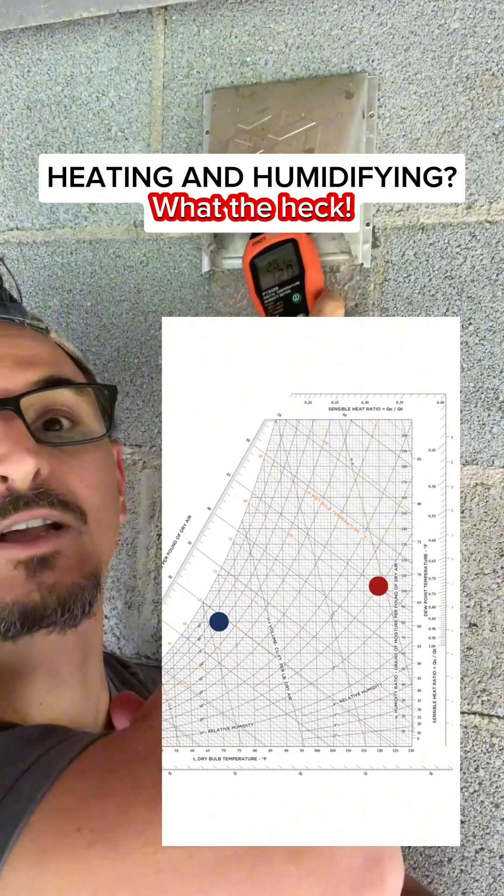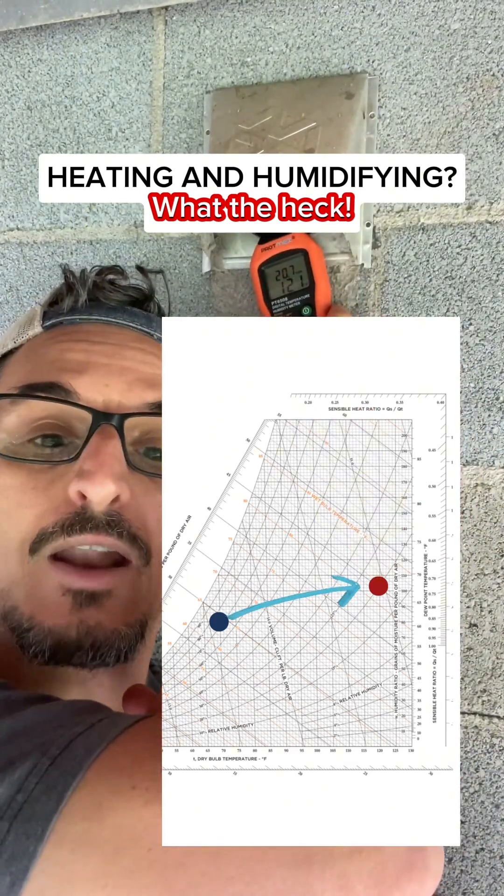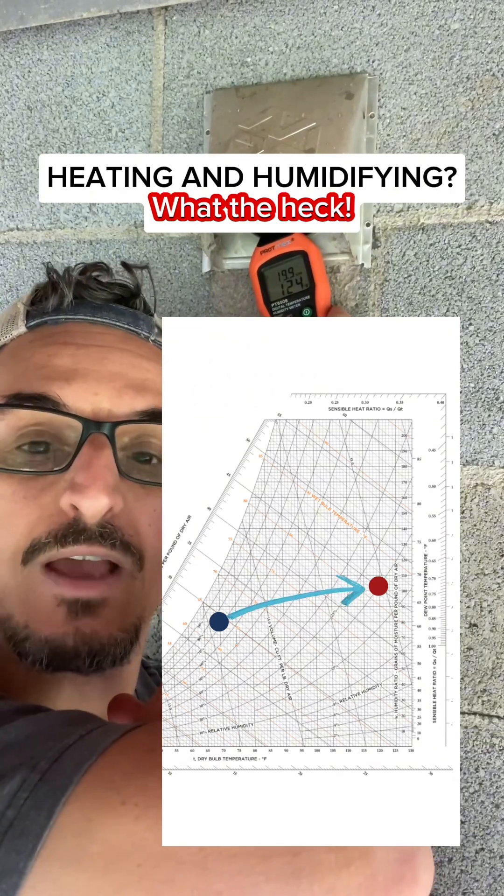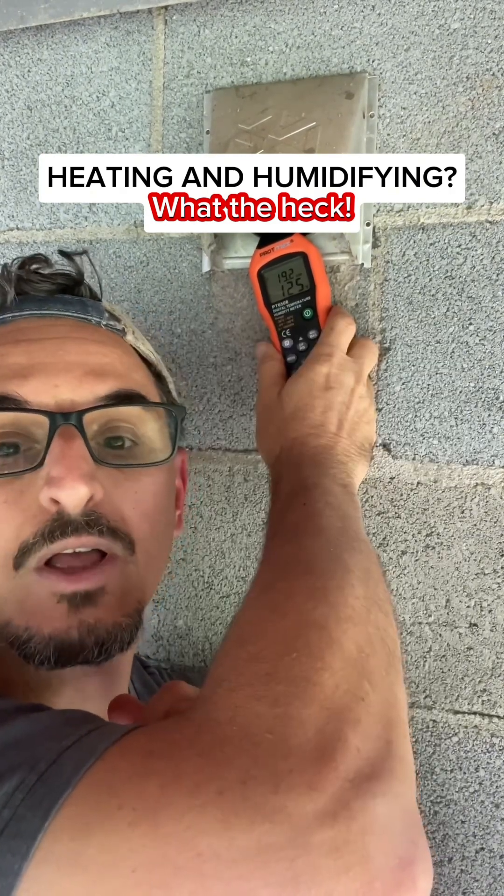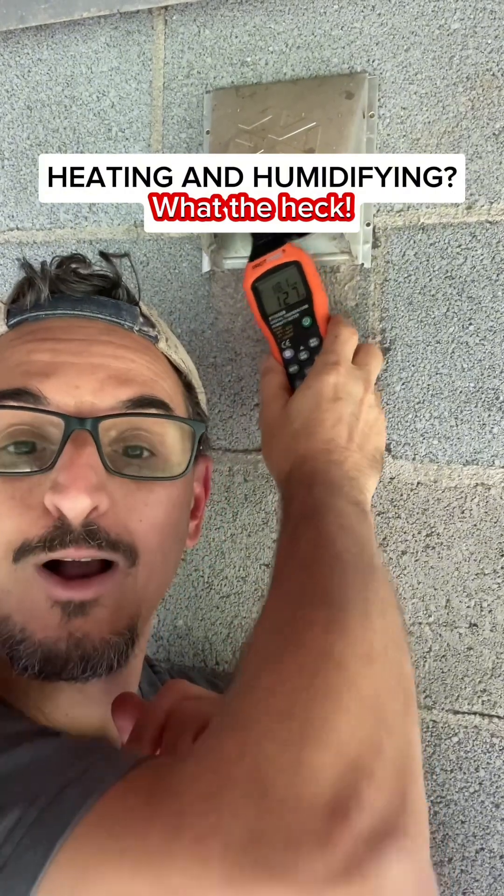you should see a line traveling to the right and upward, which indicates a heating and humidification process. Now we're in the southeast here, so we don't add humidity to the air often,